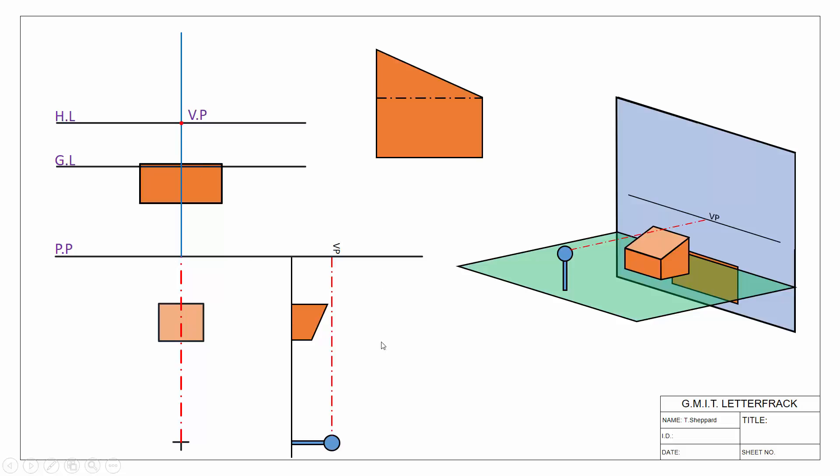So that's how we find a regular vanishing point. The approach is pretty much the exact same thing when it comes to our auxiliary vanishing point. Only instead of just dealing with direction only, we have a new component. We have direction, but we also have slope.